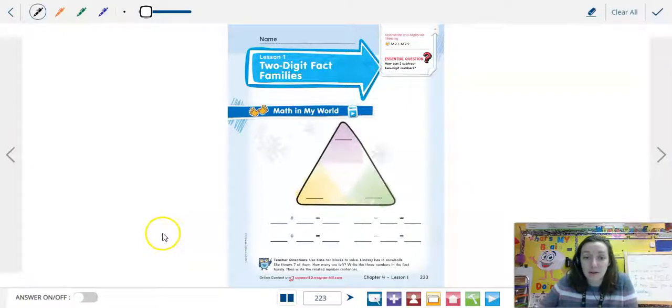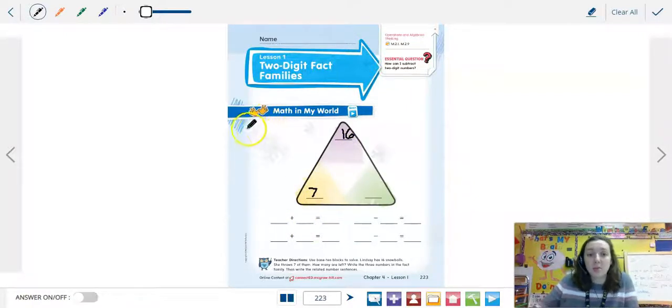So it says write the three numbers in the fact family, then write the related number sentences. It says she has 16 snowballs, and she throws seven of them. If it helps you to draw a picture at this point since we don't know...